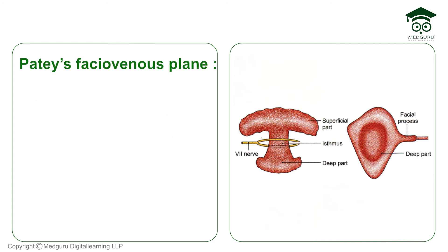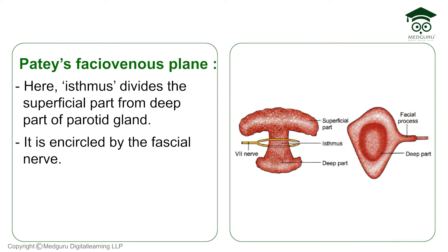An important concept is Patty's fasciovenous plane. The isthmus that divides the superficial part of the parotid gland from the deep part is encircled by the facial nerve, and that plane is called the Patty's fasciovenous plane.